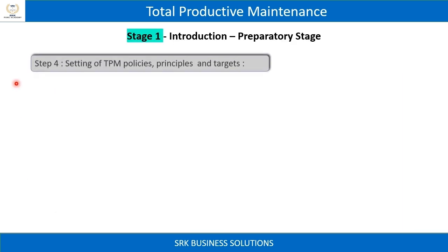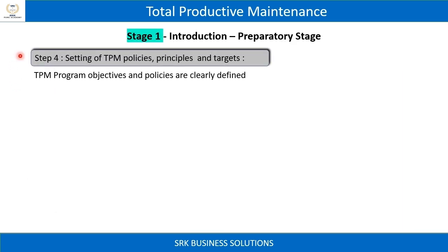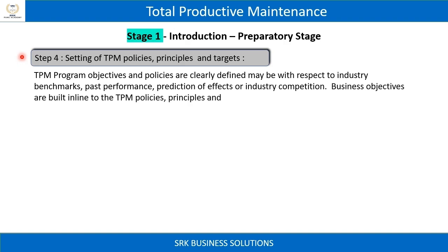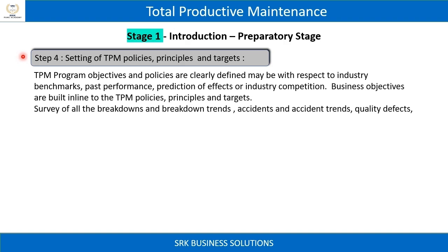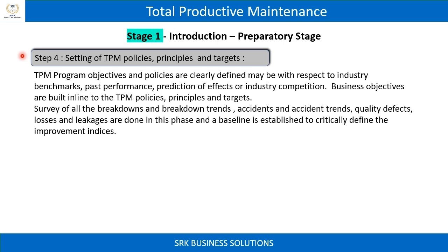Step 4: Setting of TPM policies, principles, and targets. TPM program objectives and policies are clearly defined, with respect to industry benchmarks, past performance, prediction of effects, or industry competition. Business objectives are built in line with TPM policies, principles, and targets.